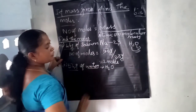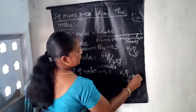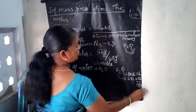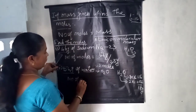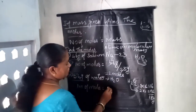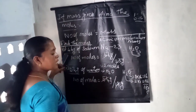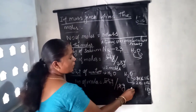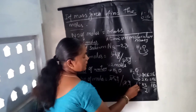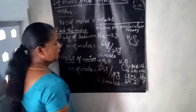Second sum: find the moles for 54 grams of water (H₂O). First calculate the molecular mass using the L-shape method: oxygen = 16 × 1 = 16, hydrogen = 1 × 2 = 2, total molecular mass = 18 grams. Number of moles = mass ÷ molecular mass = 54 g ÷ 18 g = 3 moles. I will give some more example sums for your practice.